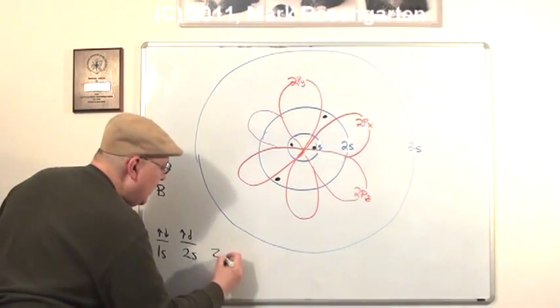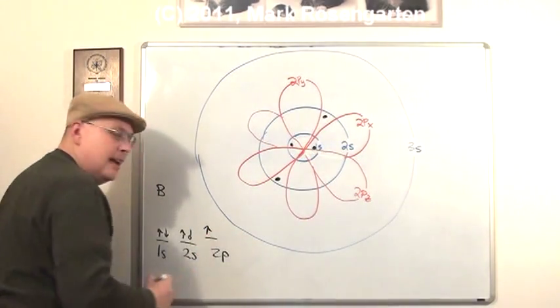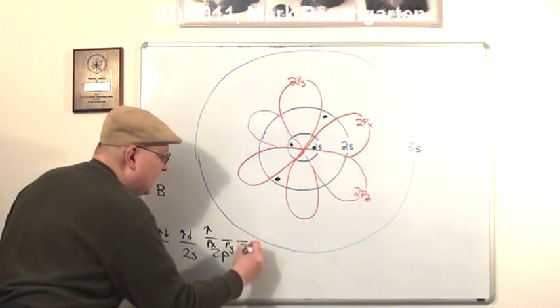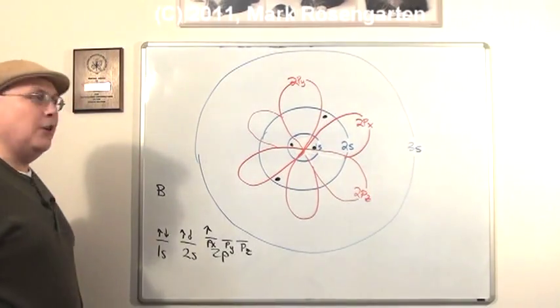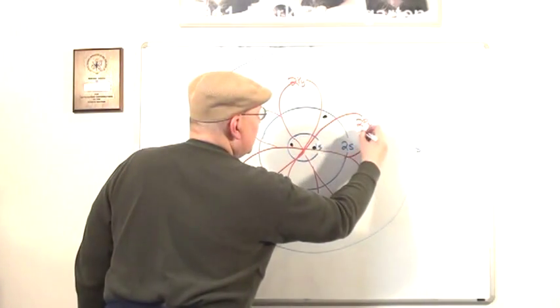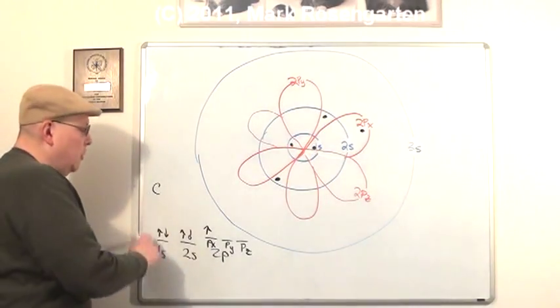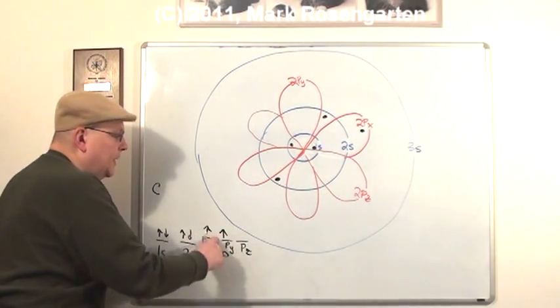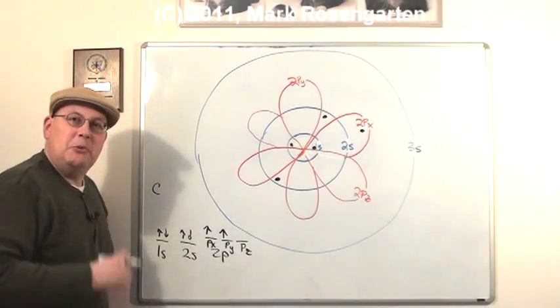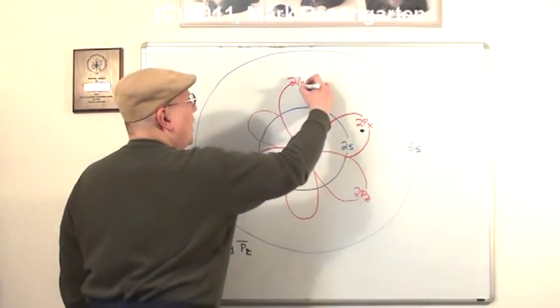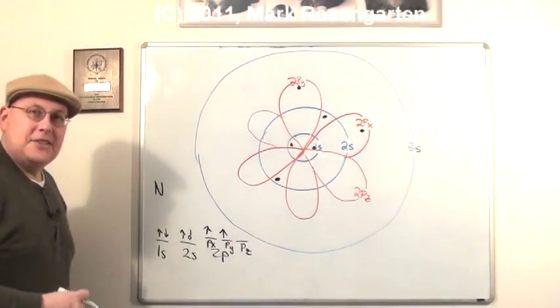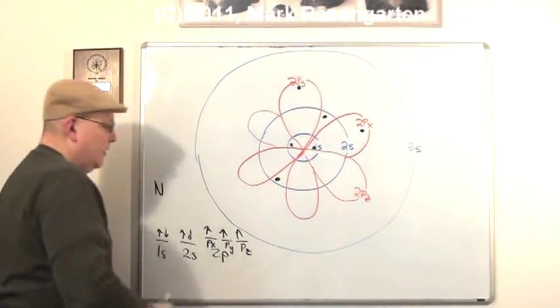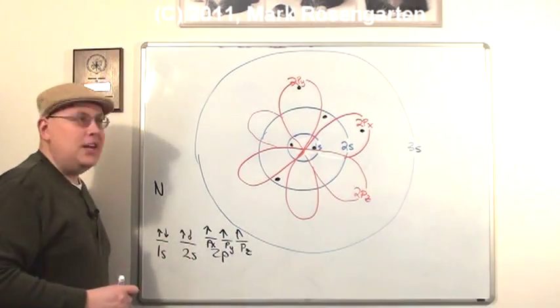Boron has a configuration of 1s², 2s², 2p¹. Now there's the three orbitals: the px, the py, and the pz orbital. So the px fills up with an electron first. Carbon has a configuration 1s², 2s², 2p², or px up and py up. Because the ups go in first before any downs go in. So p sub y gets an electron. Nitrogen has a configuration 1s², 2s², 2p³. The third electron goes into the z orbital.